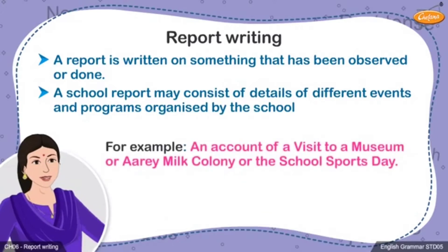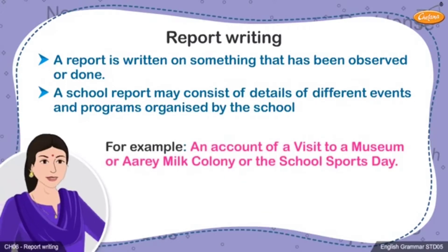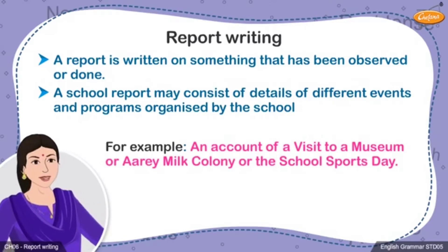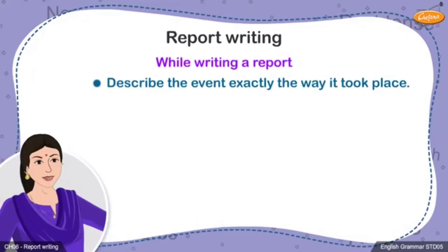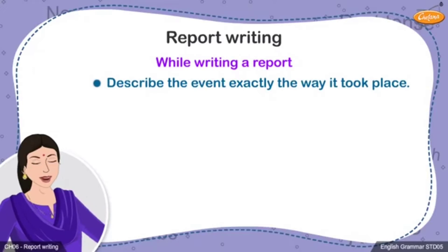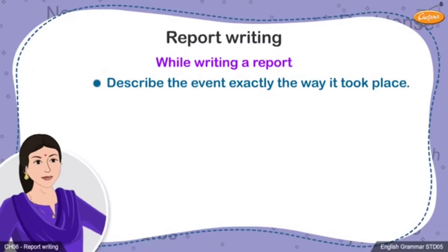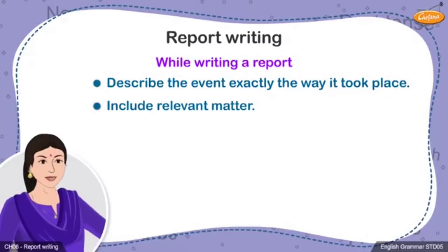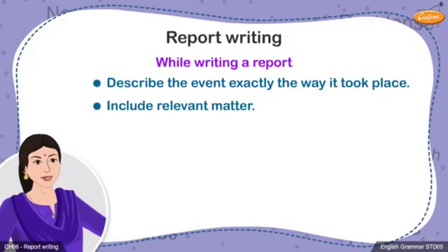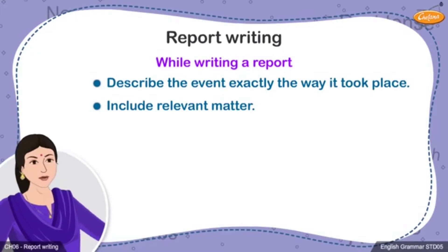For example, an account of a visit to a museum, R.A. Milk Colony, or the school sports day. While writing such accounts, it is necessary to describe things as they take place. You must describe when and where the event took place. Care should be taken to see that the report written has relevant matter. For instance, while describing a visit to R.A. Milk Colony, it is not necessary to comment on the beauty of the surroundings or the structure of the buildings there.